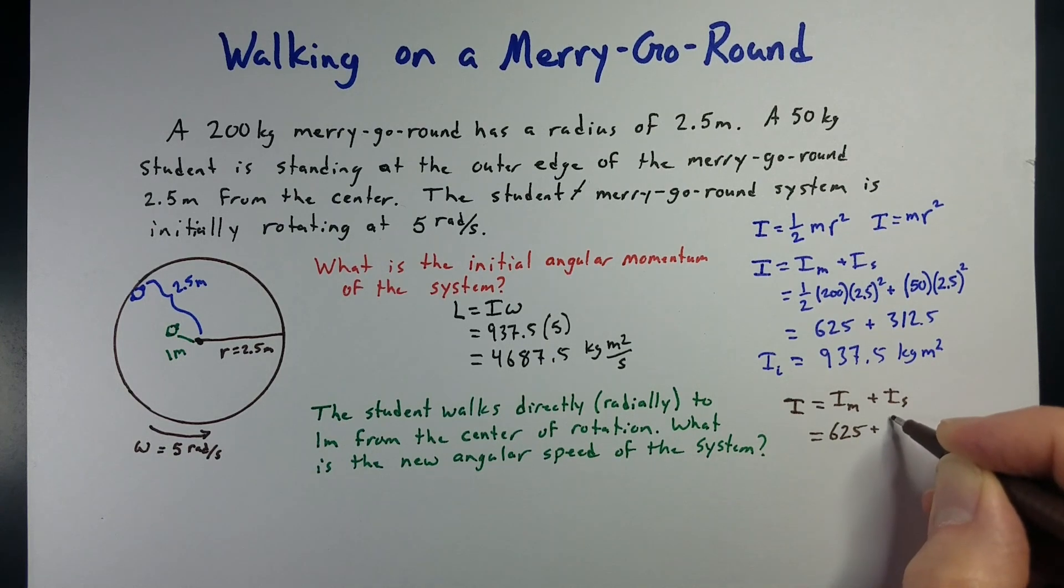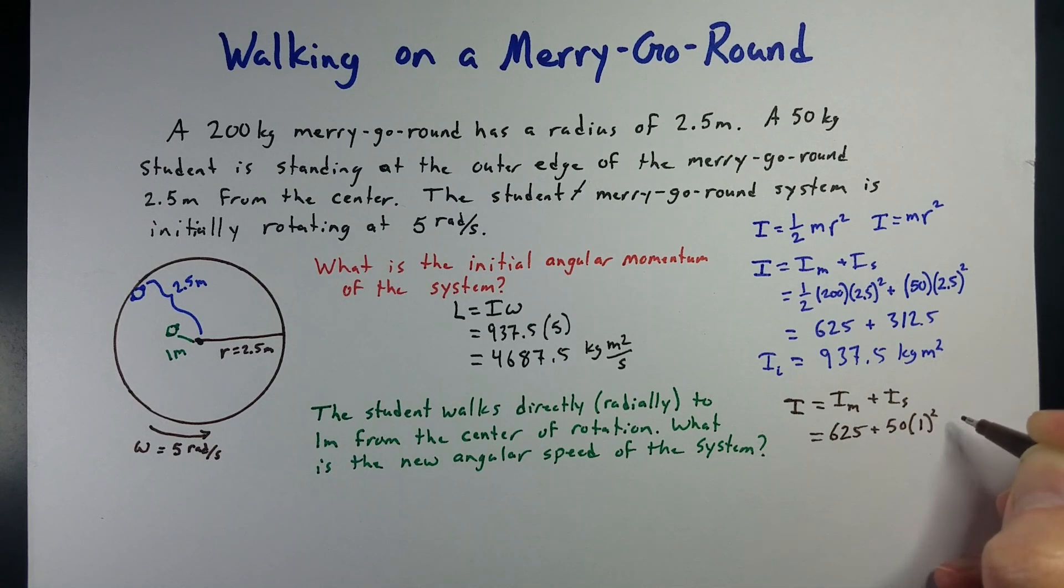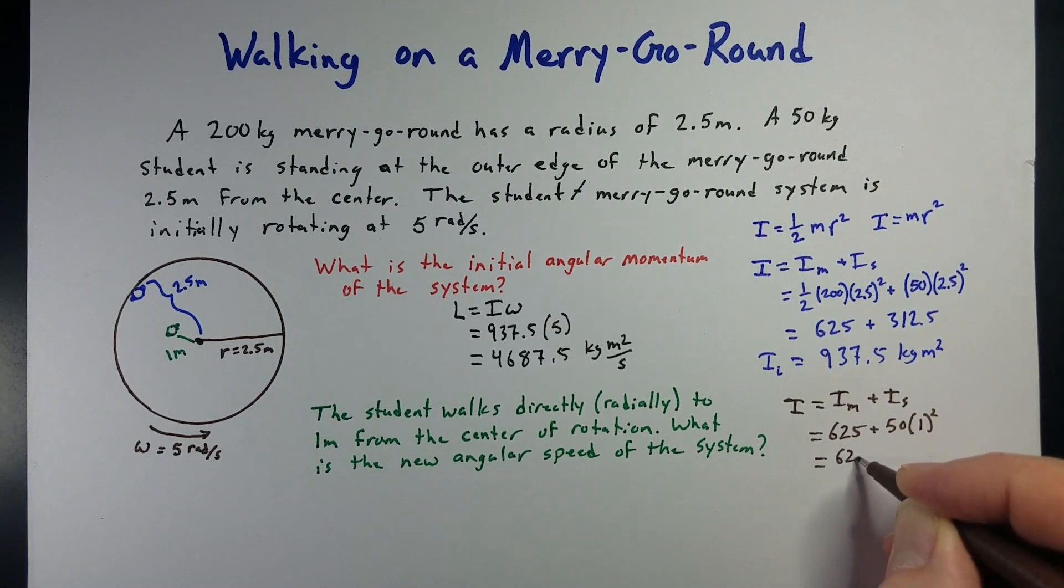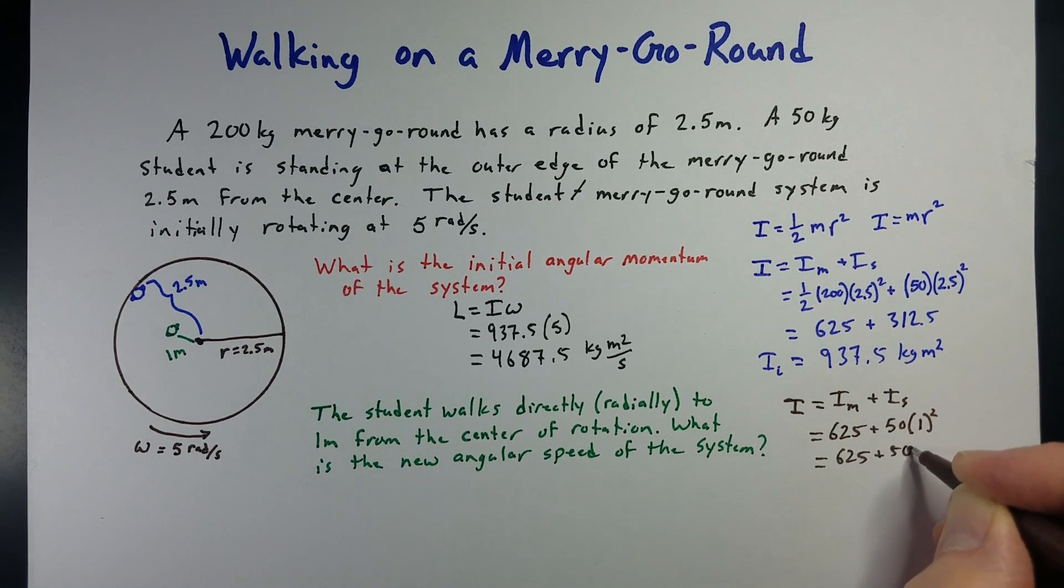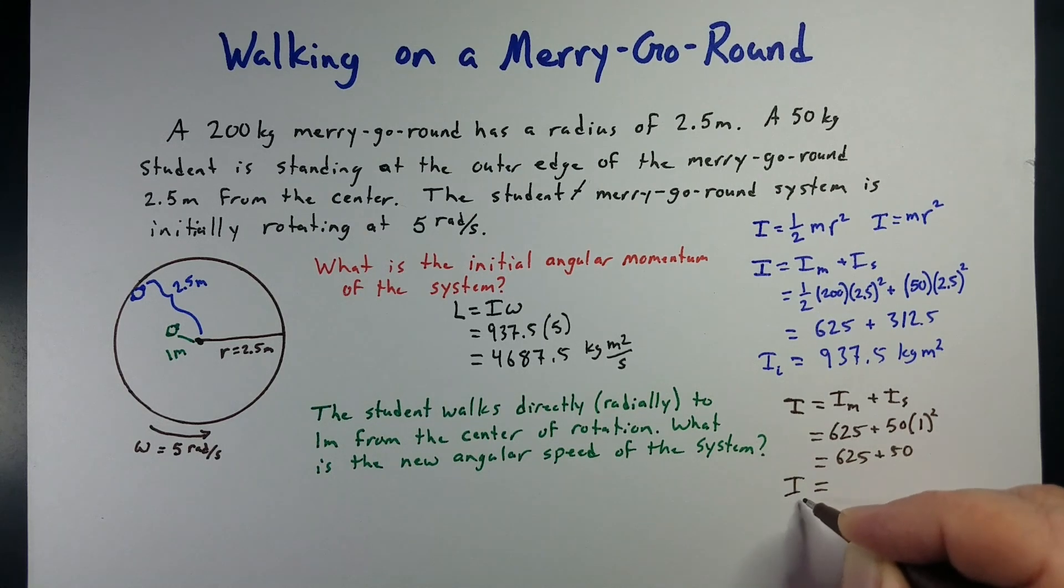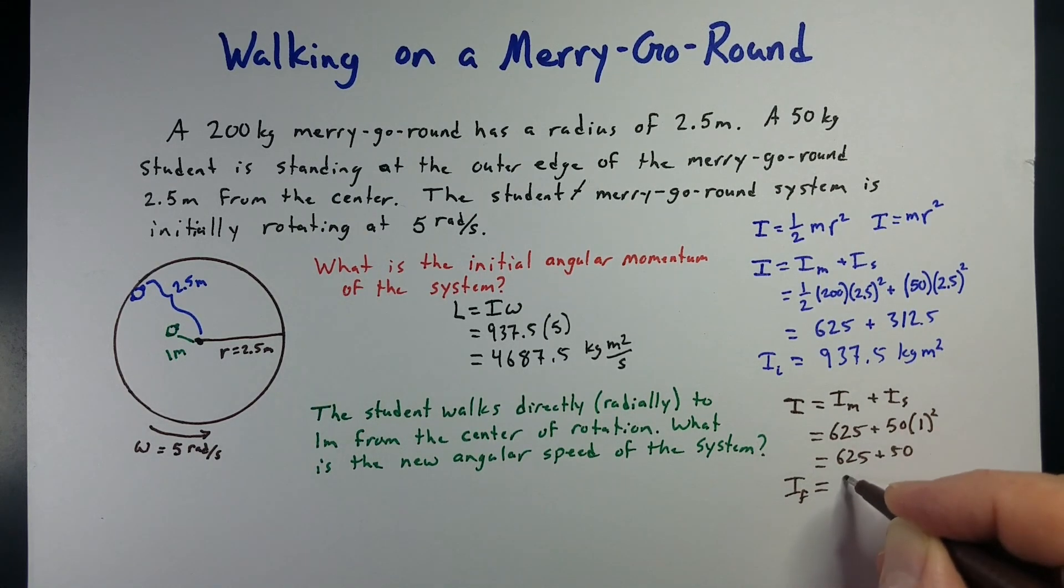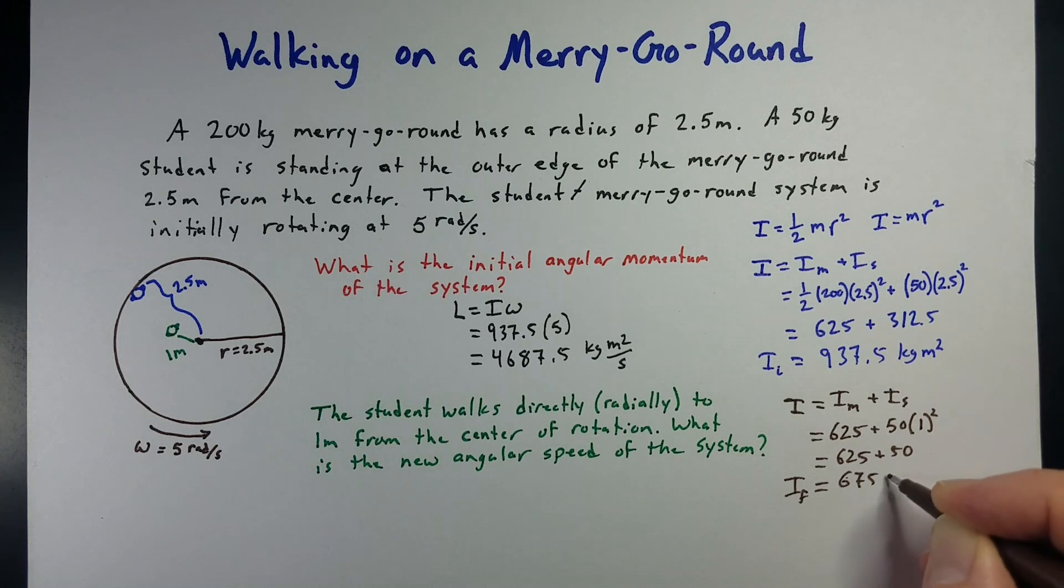But our student is still 50 kilograms, but now they're 1 meter from the center. So, now our moment of inertia at the end is going to be 675 kilograms meters squared.